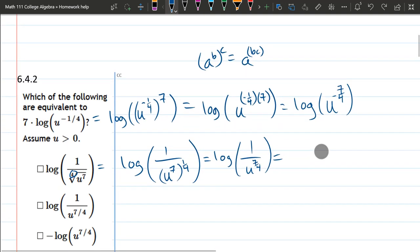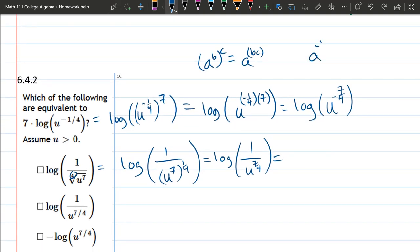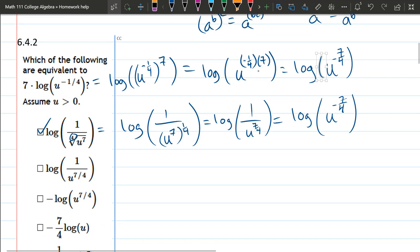That rule is a to the negative b power is one over a to the b power. So you can reciprocate it by making the exponent negative. Right there, that is what's on the line above. So this first one is equivalent.